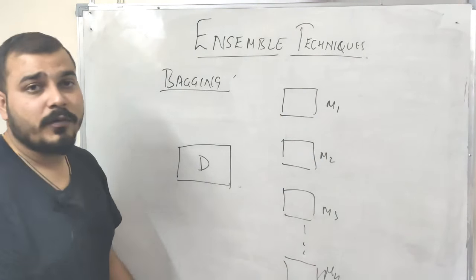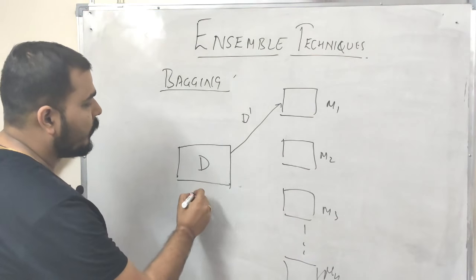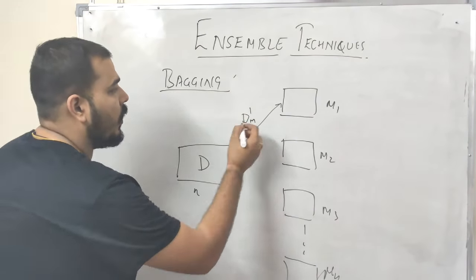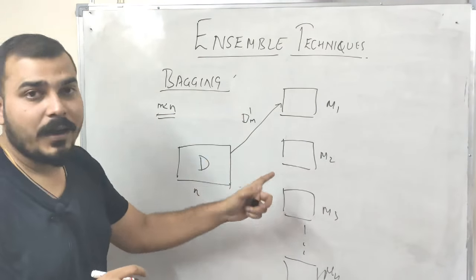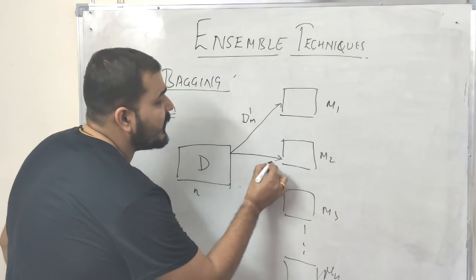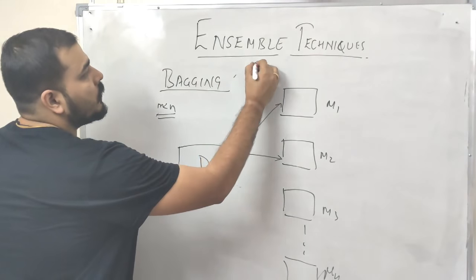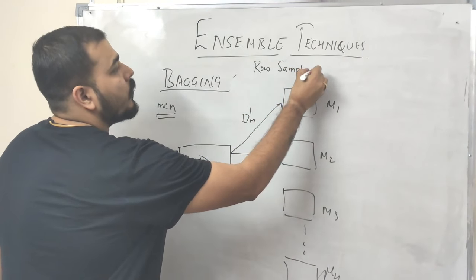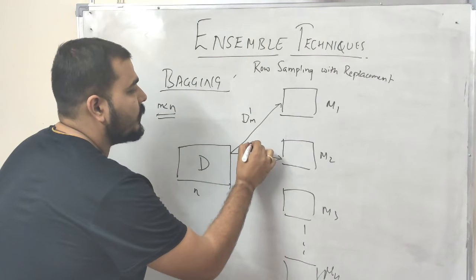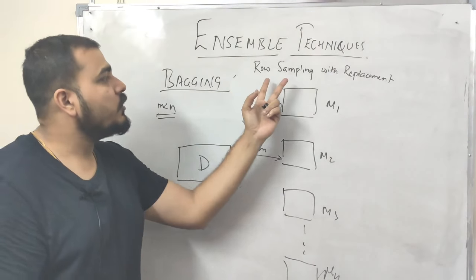For each and every model, we'll provide a sample of dataset D-dash. Suppose the original dataset has N records — here we'll select a sample of n records where n is always less than N, and provide those records to model one. For the next model, we'll again resample the records and pick up some other sample to give to model two. This is basically called as row sampling with replacement. Some records may get repeated, but we use this technique for every model we provide data to.